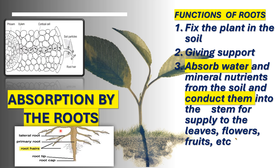Here you can see a taproot system with a primary root, lateral roots, root hairs, root tip, and root cap. This is the cross-section, or transverse section (TS), of the root. Root hairs originate from the epidermal cells. The inner region consists of cortical cells, then endodermis, xylem, phloem, and pith. The detailed structure will be covered in coming videos.